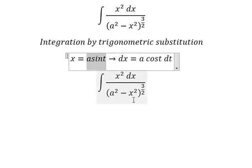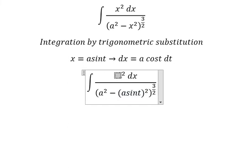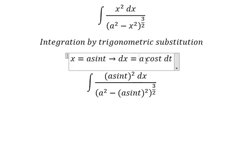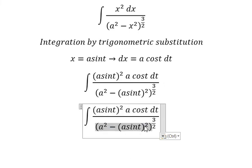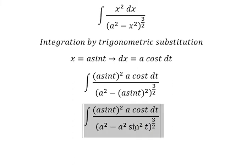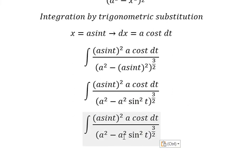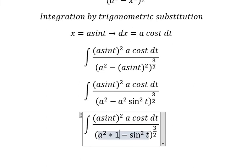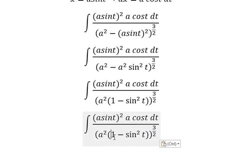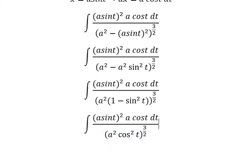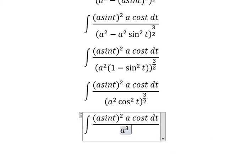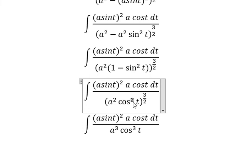I will substitute this into the integral. We change dx by a·cos(t) dt. We have a²·sin²(t), then a² — we can do factorization. Next, one minus sin²(t) we change to cos²(t). We get a to the power of 3 times cos³(t), because 3 over 2 multiplied by 2 gives 3.